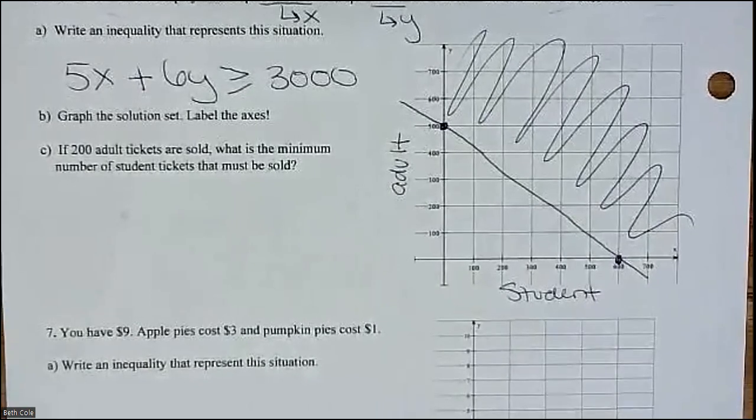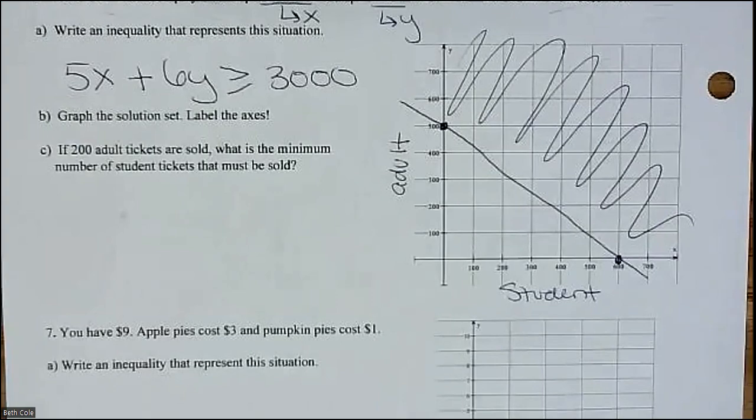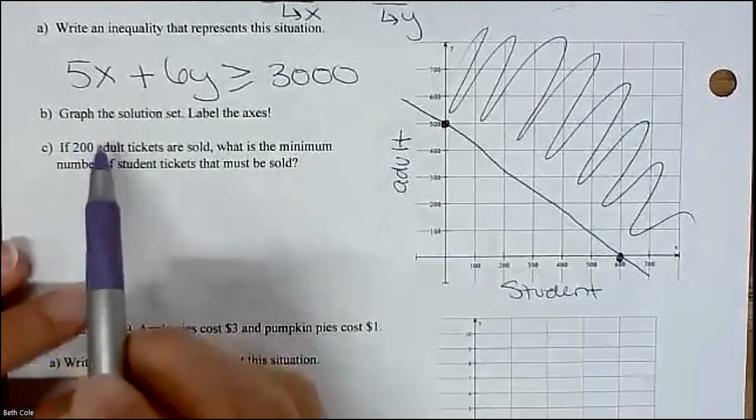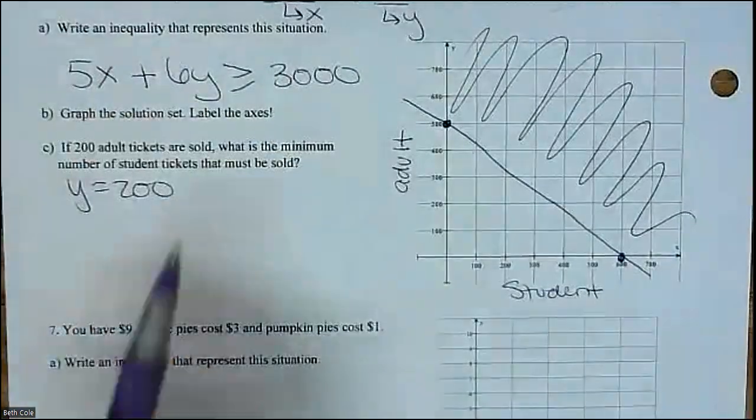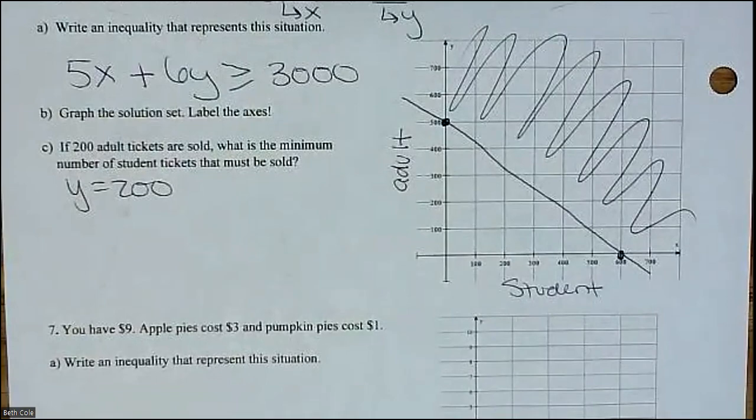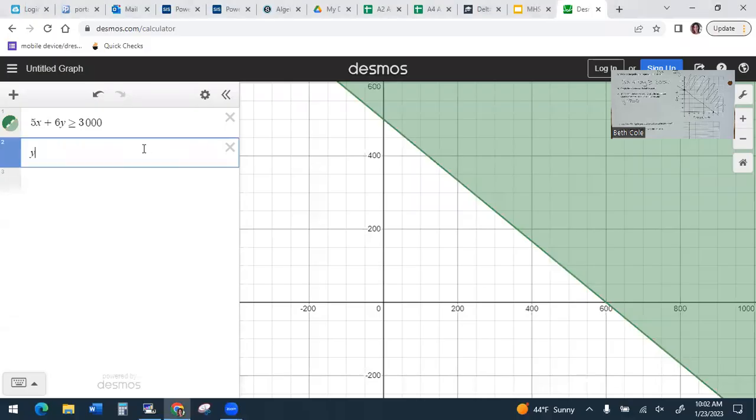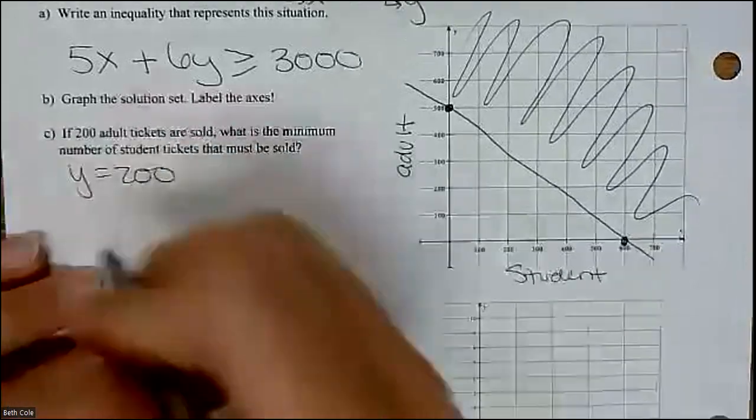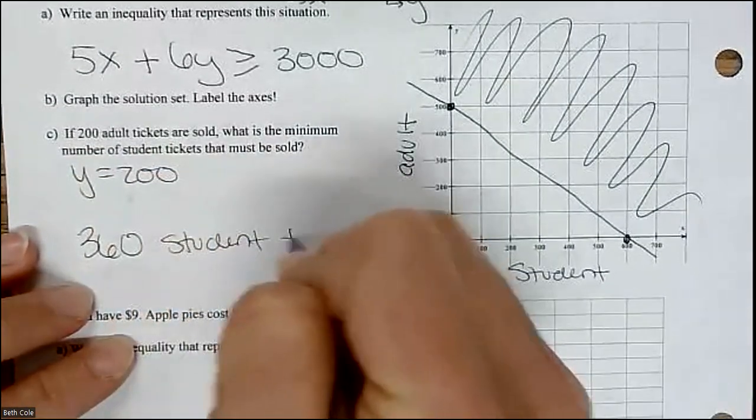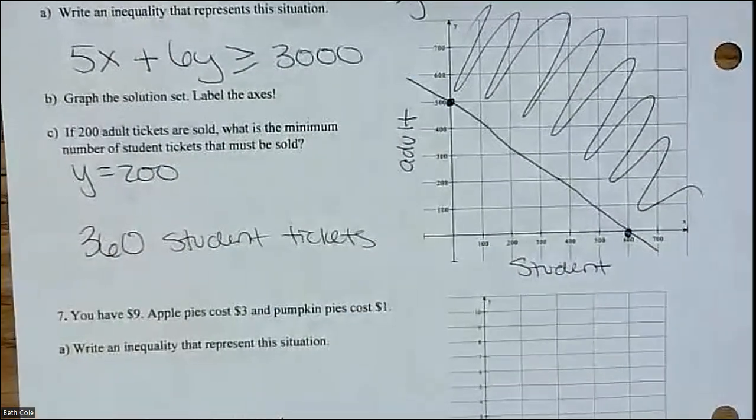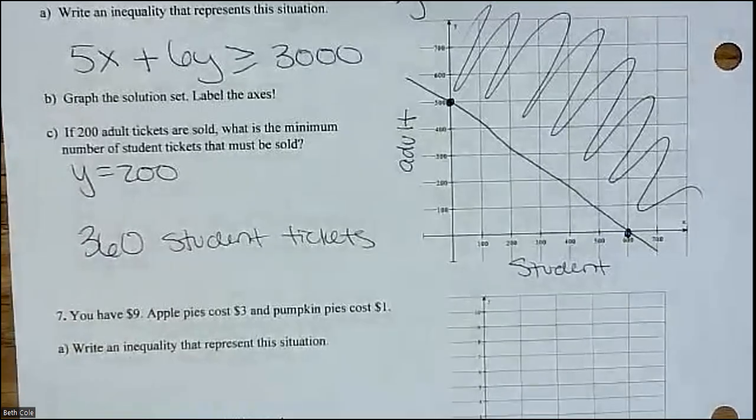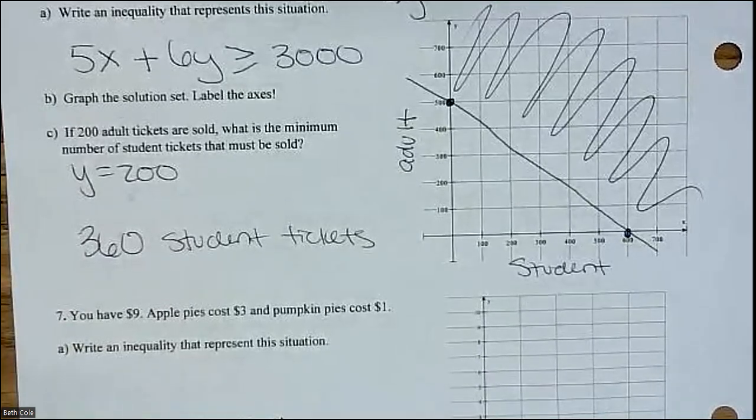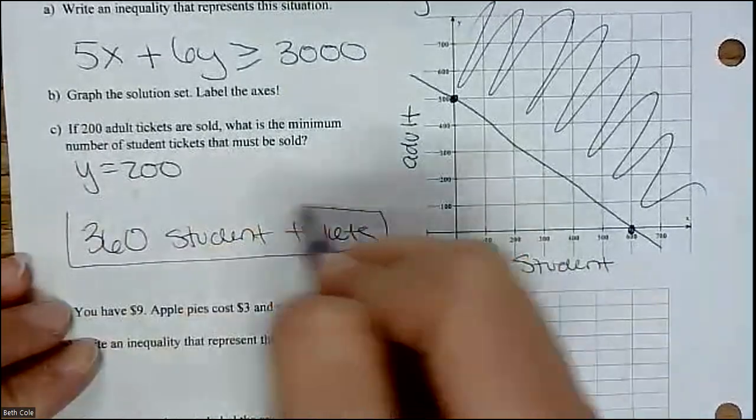Now C says if 200 adult tickets are sold, what's the minimum number of student tickets that must be sold? Was adult x or y? y. So we want y to be 200. It says 200 adult tickets. So let me go back to the graph. And down here, I'm going to put y equals 200. Here's the intersection. How many student tickets have to get sold? Do you see that there? 360? So 360 student tickets. At least 360. So you could sell 360 or more. So like 370, 380. So 360 or more. It's like that's the minimum that we'd need to sell.